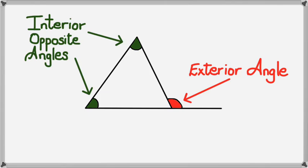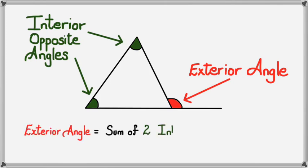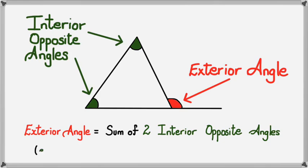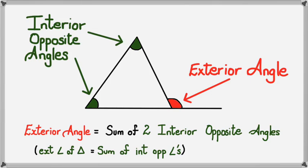The exterior angle is the sum of the two interior opposite angles. This is probably the longest geometric reasoning you'll have, because it looks like this: exterior angle of a triangle equals sum of interior opposite angles.